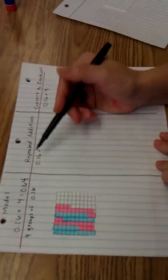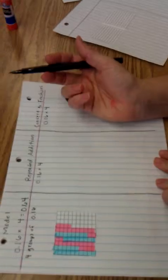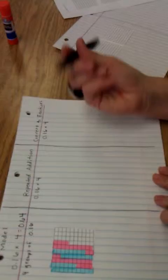Okay, so now I'm going to show a decimal multiplied by a whole number with the strategy of repeated addition because we know that multiplication is repeated addition.